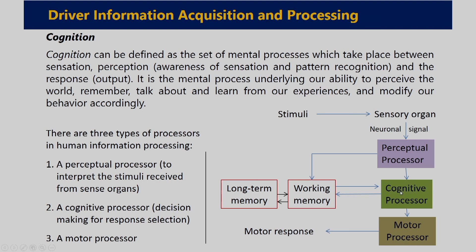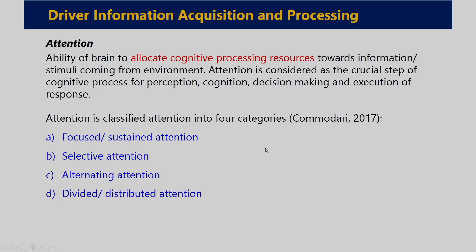The cognitive processor makes decisions based on working memory, and working memory takes the help of long-term memory. For understanding the relationship between sensation, perception, cognition, and motor response, we also need to understand attention. Attention is the ability to allocate cognitive processing resources towards information or stimuli coming from the environment — it is the allocation of cognitive processing resources, meaning how much cognitive resources can be allocated for a particular task. Attention is considered a crucial step for cognitive processes of perception, cognition, decision making, and execution of the response.